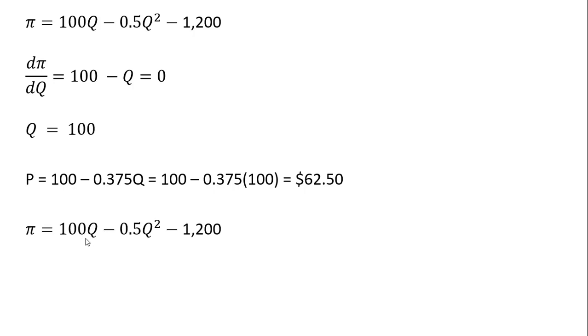And now to get the level of profit, rewriting our profit equation, and just plugging in for Q, we're going to plug in 100. And simplifying this, this monopolist has a positive profit of $3,800.